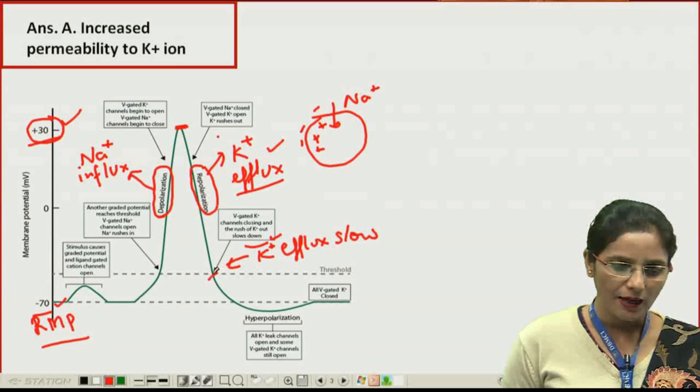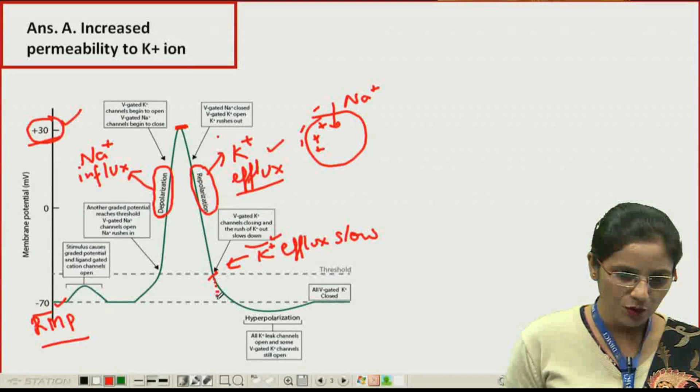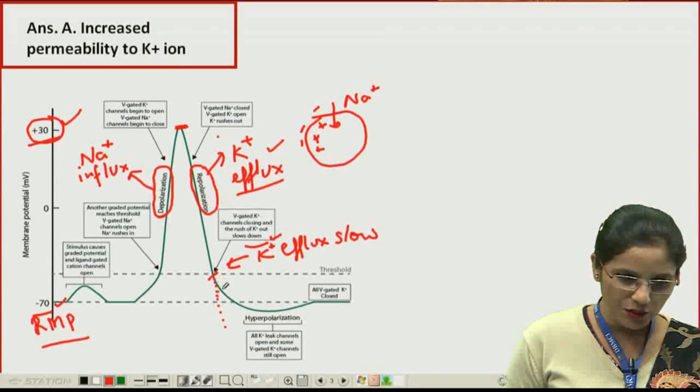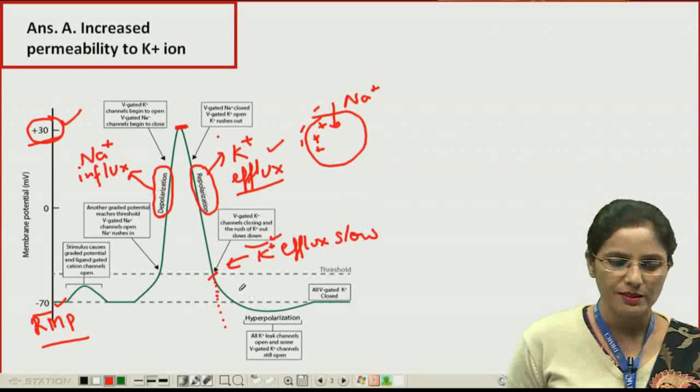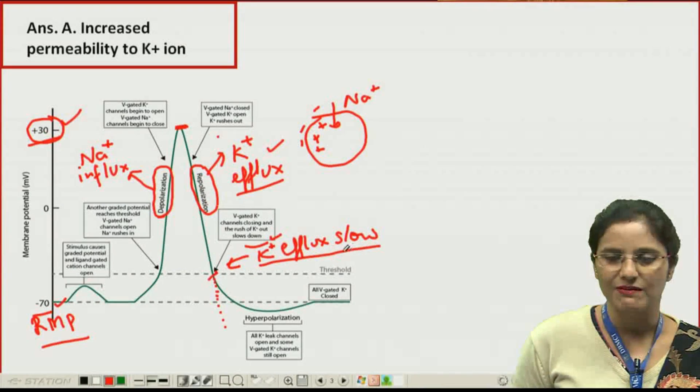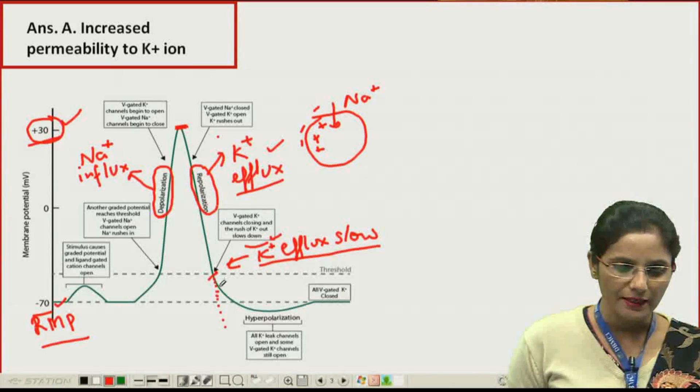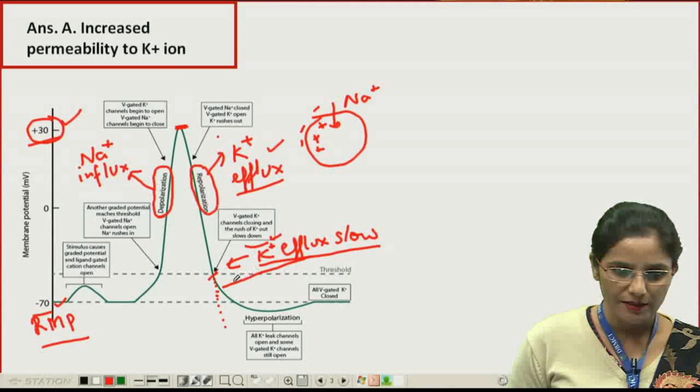And here if you see, the normal curve should be like this, but the actual curve is this one. So there is a reduced slope because the potassium efflux slows down, and this phase is known as the after depolarization phase.